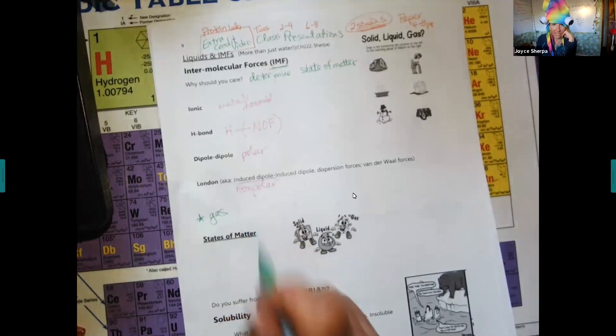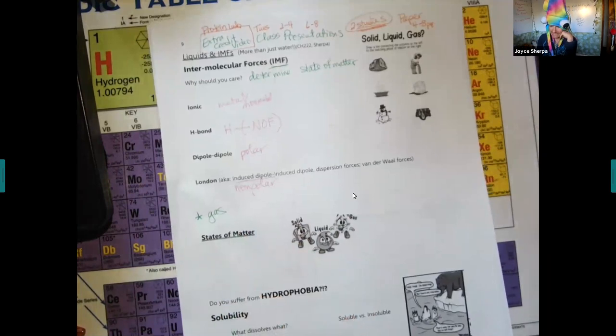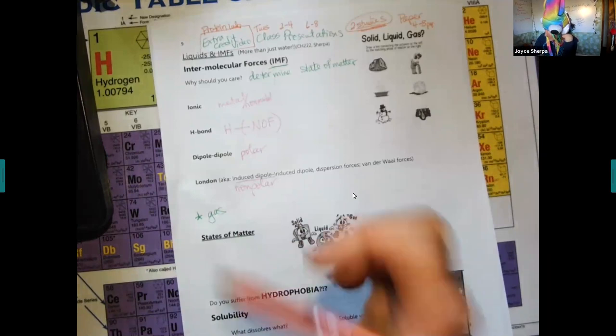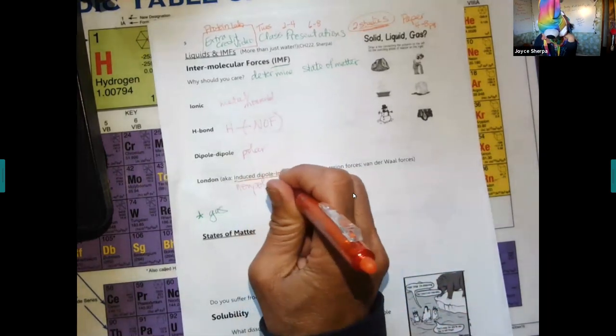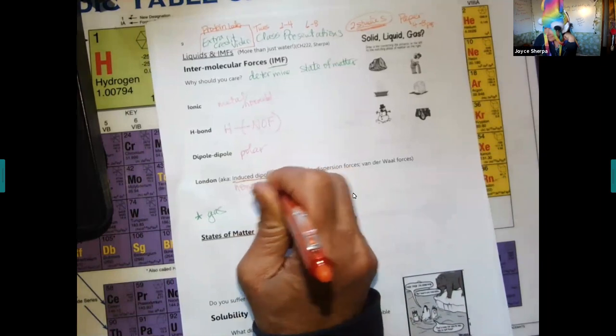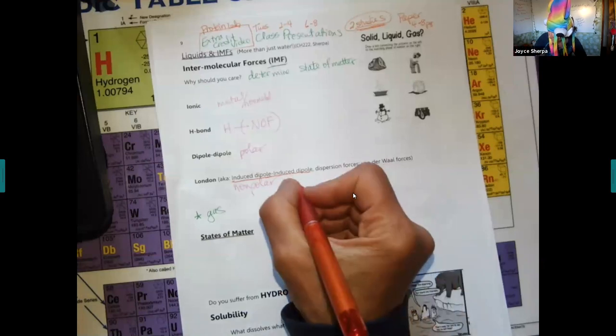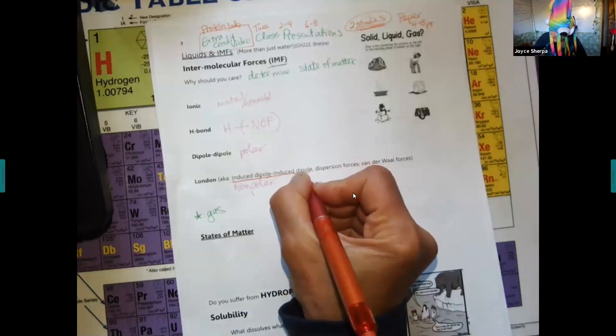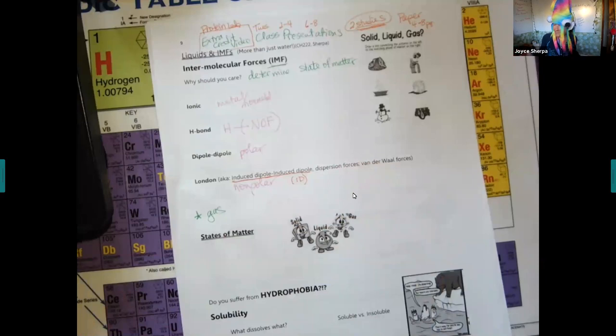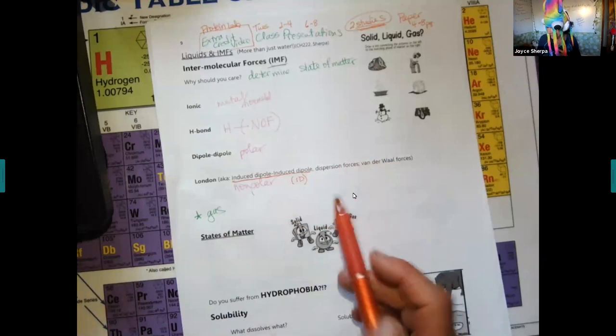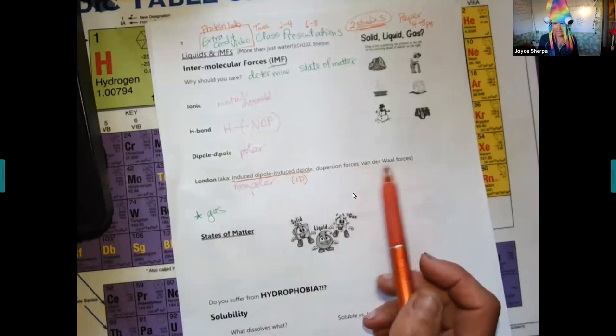The London are things that are nonpolar. Since we don't technically have a book, they are often actually now called induced dipole, induced dipole. It's always between two atoms or two molecules. Some students will call them the ID. I just call them London.